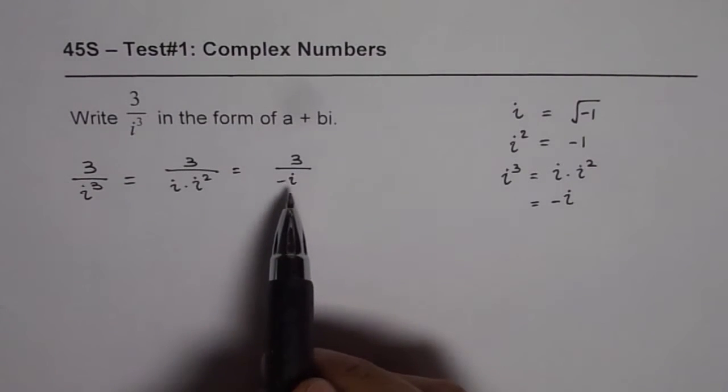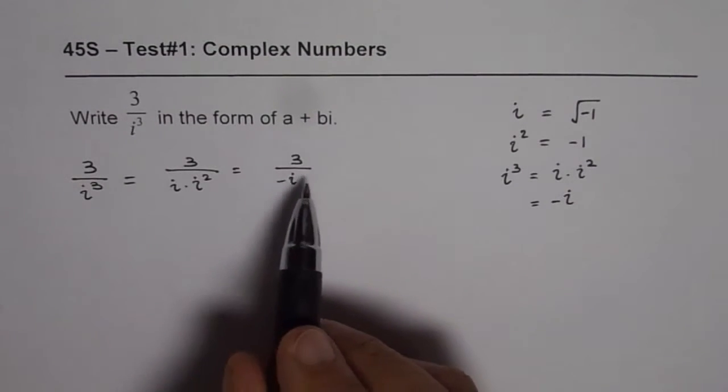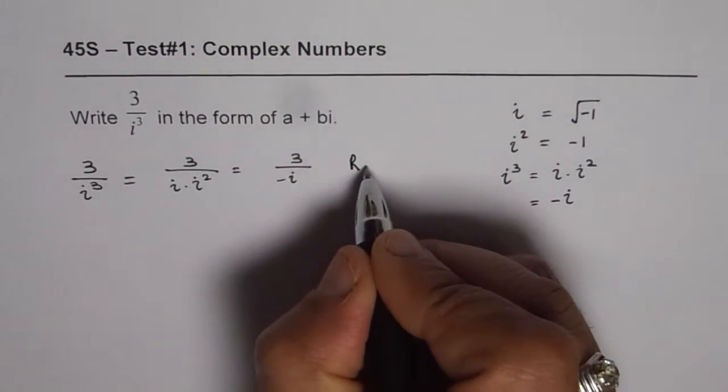So what we really want to do is write this complex number in standard form, which is a plus bi. To do that, we should rationalize. So let us rationalize.